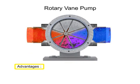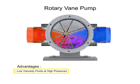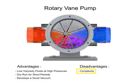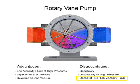The advantages of vane pumps are that they can handle low viscosity fluids at relatively higher pressures, can dry run for short periods, and develop a good vacuum. Their disadvantages include complexity and their unsuitability for both high pressure and high viscosity fluids.